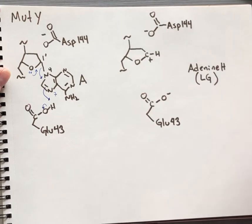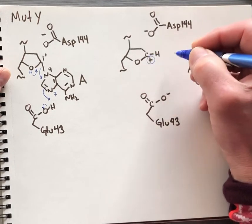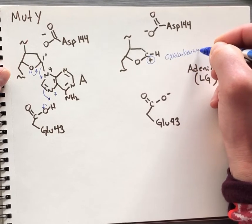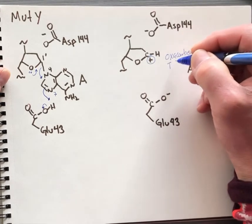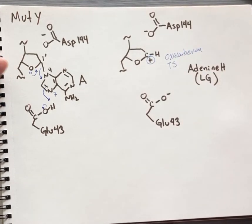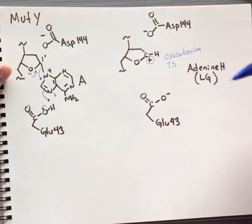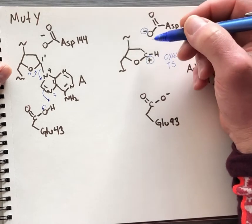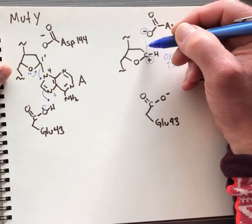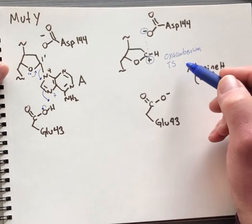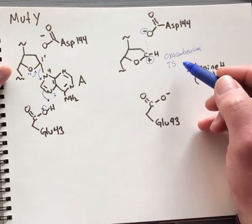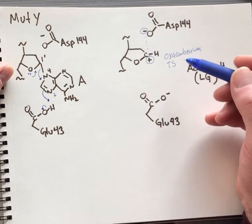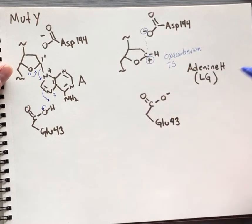Drawing some labels here: this is the oxacarbenium ion transition state. It's a transition state, meaning it is the most unstable intermediate during the whole process. The close proximity of aspartate 144 with its negative charge helps explain how the enzyme is stabilizing the oxacarbenium transition state. In doing so, it makes the reaction faster because there is a lower activation barrier separating the substrate and the products.